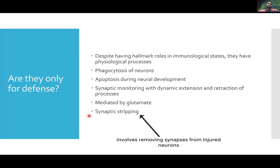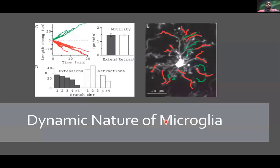Synaptic stripping is similar to phagocytosis and apoptosis but occurs in the adult brain, and has different functions in different regions of the brain.